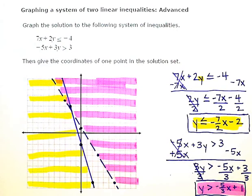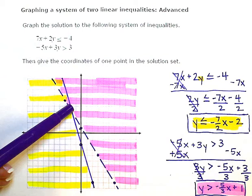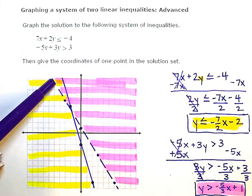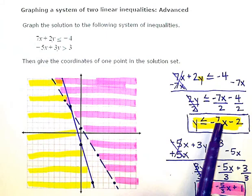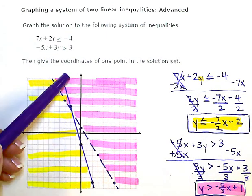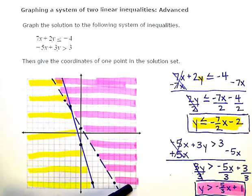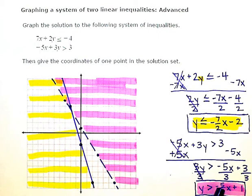So now I've basically divided my grid or my coordinate plane into four regions. This region over here has just yellow stripes. Those are the solutions to just this inequality. This region right here has just pink stripes. So those are the solution points to just this inequality.